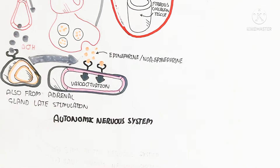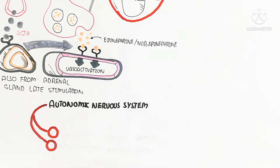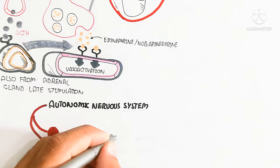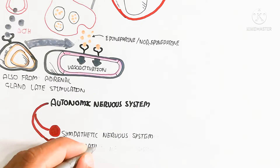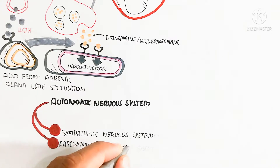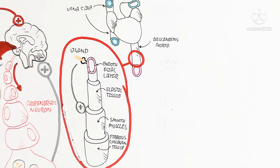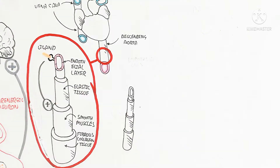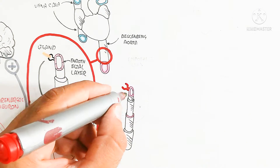The autonomic nervous system is made up of the sympathetic nervous system and the parasympathetic nervous system. The sympathetic nervous system is used for vasoconstriction and the fight-and-flight response, increasing blood pressure. The parasympathetic nervous system causes vasodilation, decreasing blood pressure, and activates the rest-and-digest response.